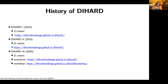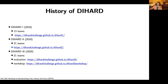The first Die Hard ran in spring 2018 with 13 teams competing, and results were presented later that year at Interspeech in a special session in Hyderabad. That was followed one year later by Die Hard 2, which ran spring 2019 with 21 teams, presented at a special session. Die Hard 2 was then followed by Die Hard 3, which ran fall 2020, again attracting 21 teams, with results presented at a standalone workshop.